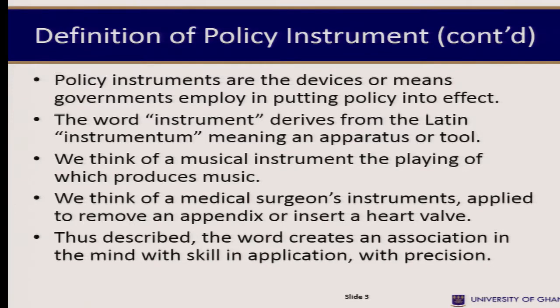The world connotes a direct and predictable relationship between cause and event. However, we use Policy Instruments to shape environmental or social behavior. We find that technical engineering exactitude is not a characteristic of Policy Instruments; instead, we talk of large uncertainties as to the outcome. Policy Instruments are the tools government employs in the implementation of policies, and they are the devices or means governments employ in putting policy into effect.